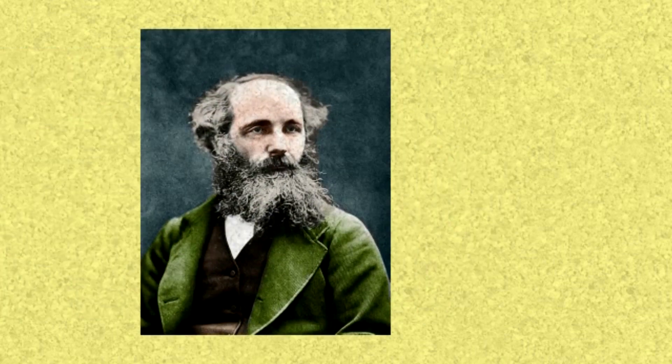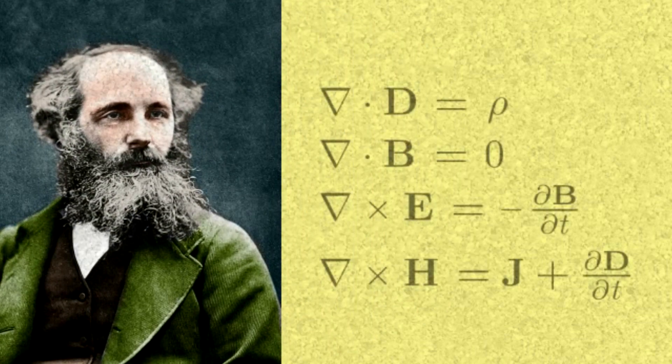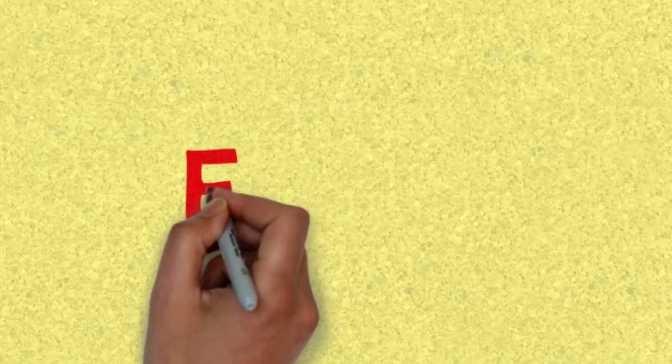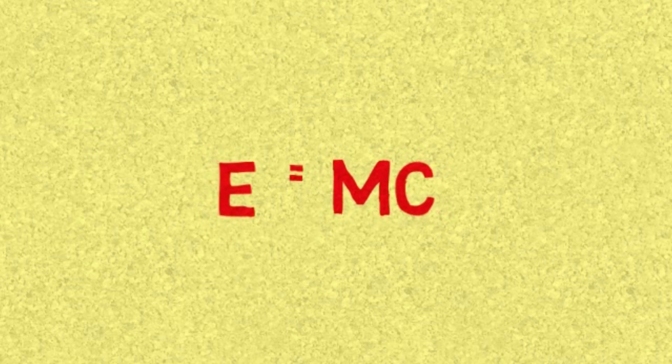In the year 1865, Maxwell came up with his equations for the propagation of light and how light behaves, and we concluded that it was electromagnetic waves at the time. Now Einstein, based on that idea, came up with a bunch of findings, and one of them was the famous equation E equals mc squared.